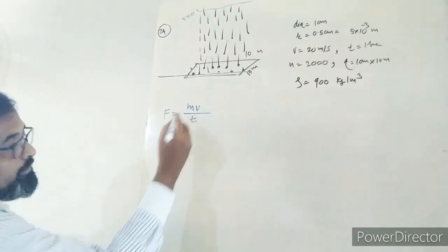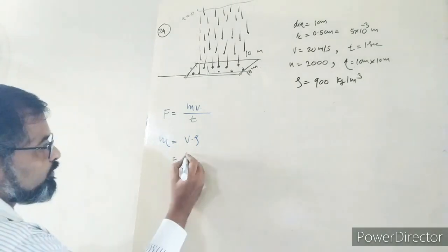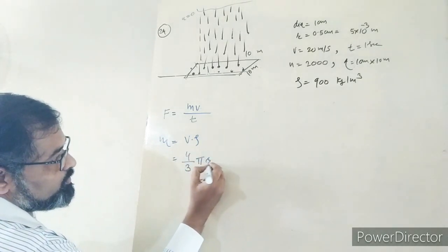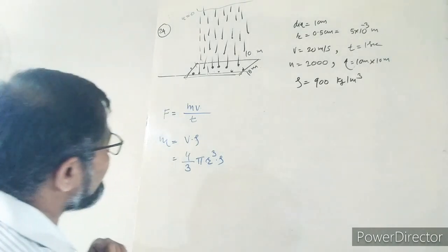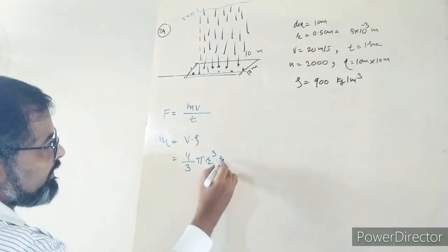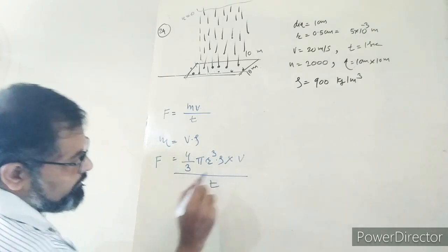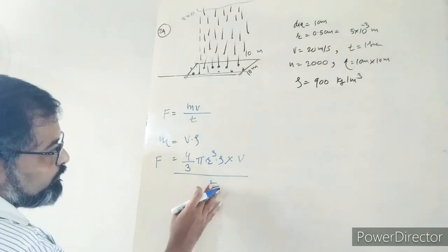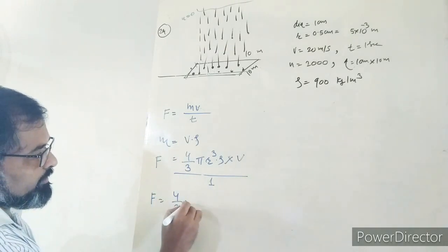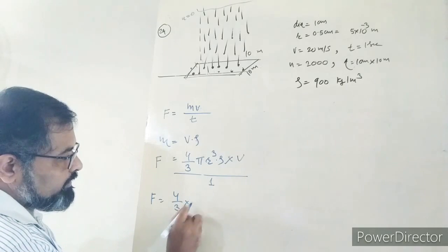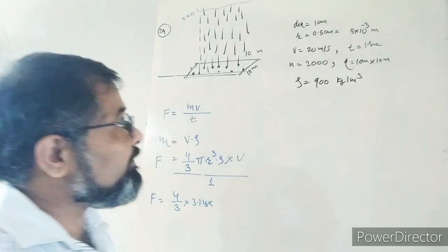To find the mass, we use density times volume. The hailstones are spherical in shape, so the volume is (4/3)πr³. Density equals mass divided by volume, so mass equals density times volume. To find the force, we use mass times velocity divided by time. The radius is 0.5 cm, and we have 4/3 × 3.14159... × r³.